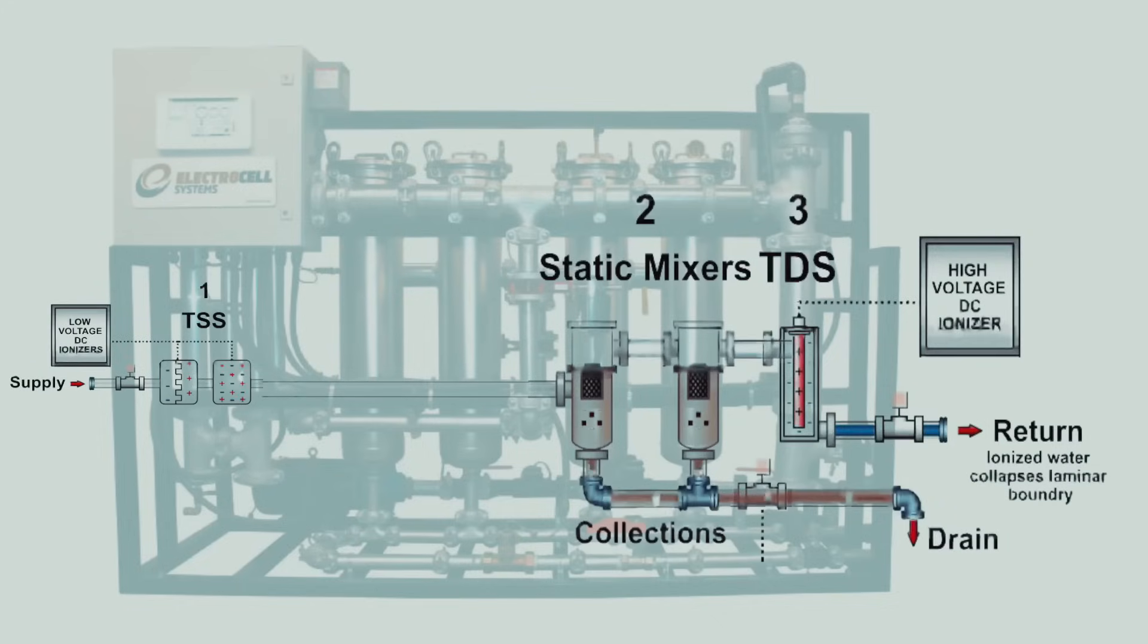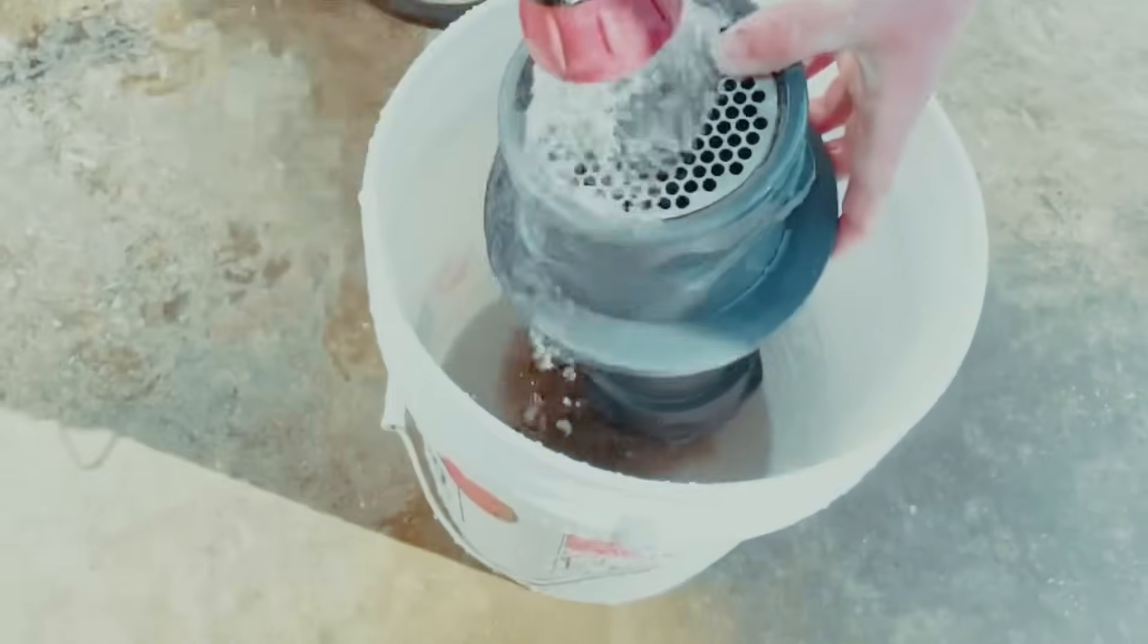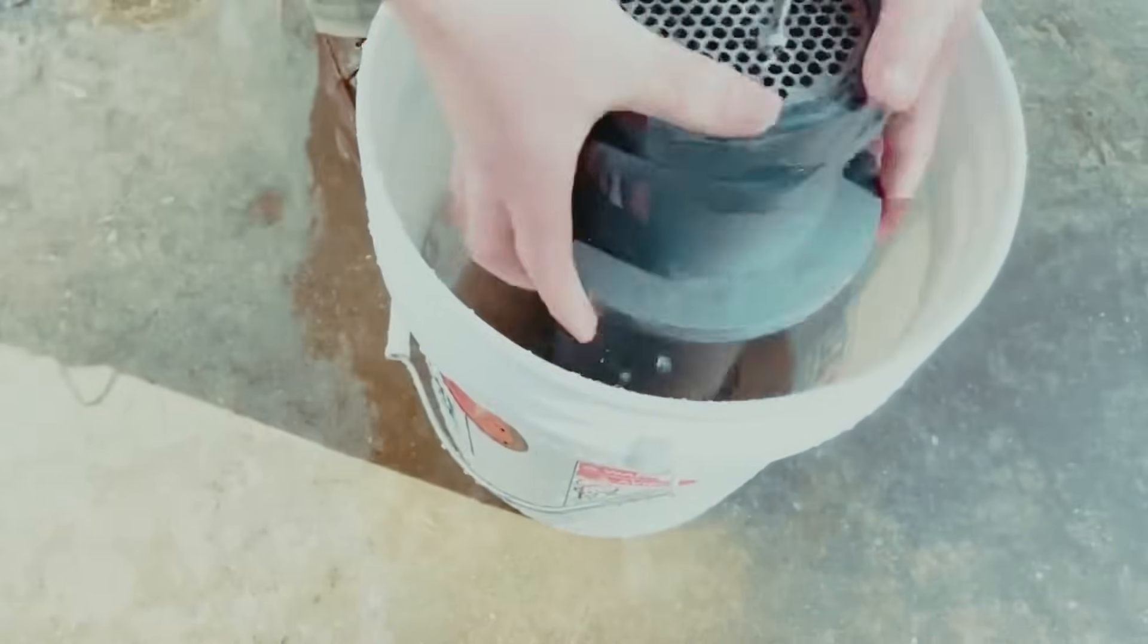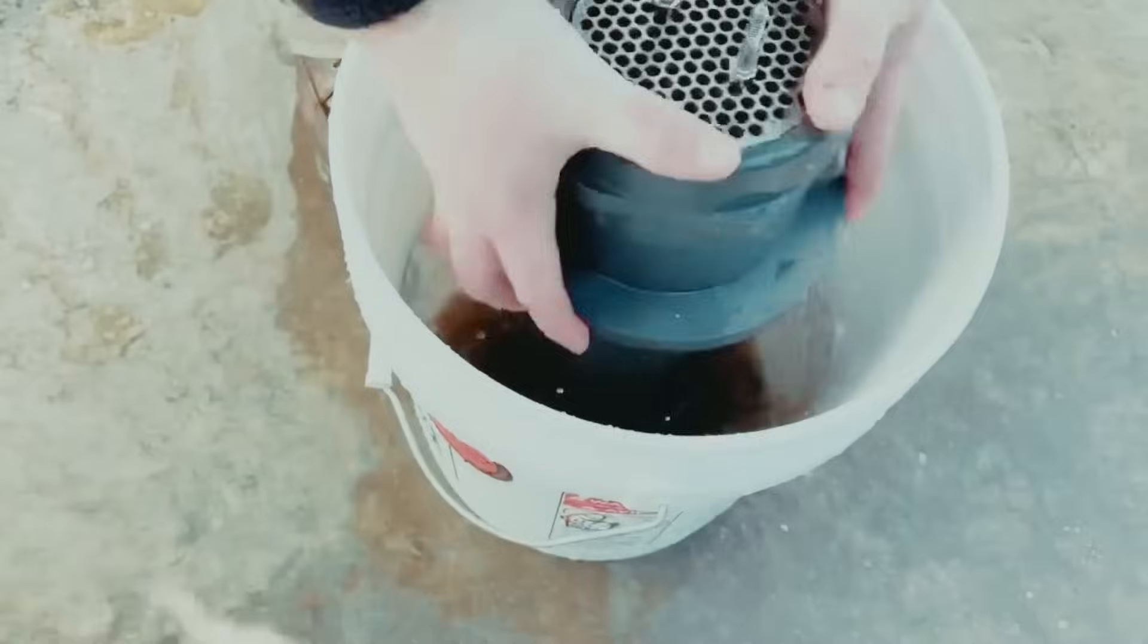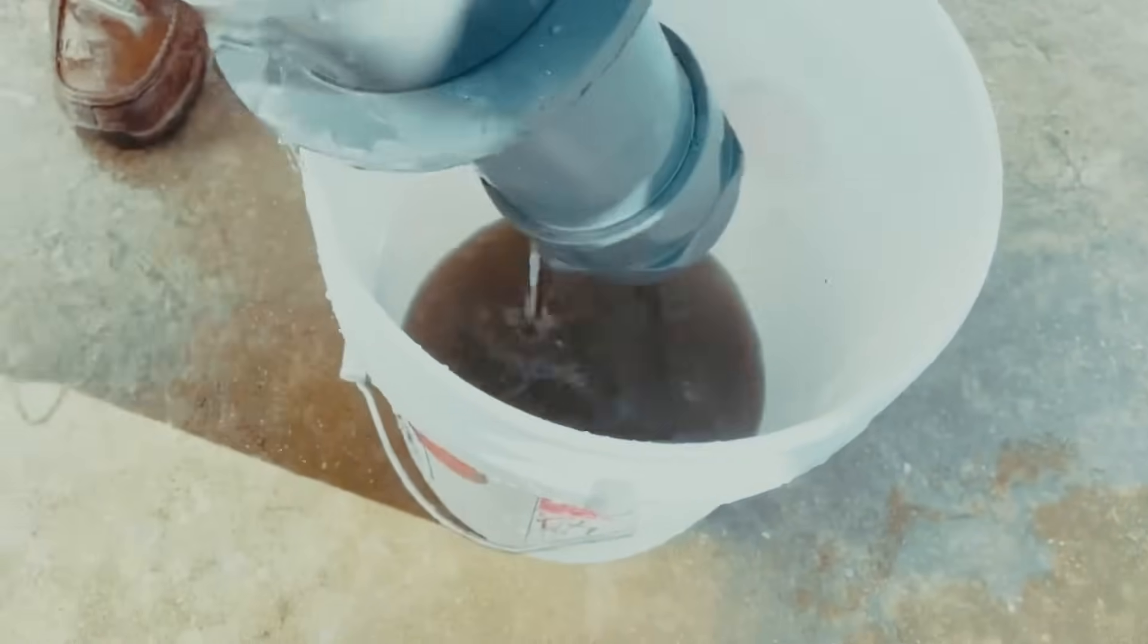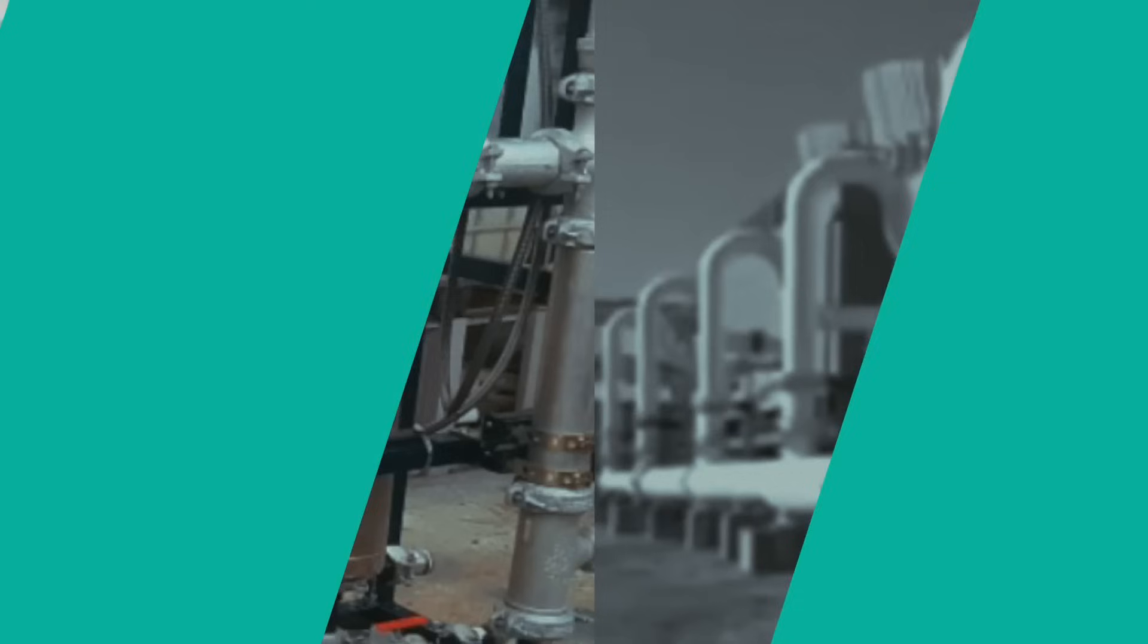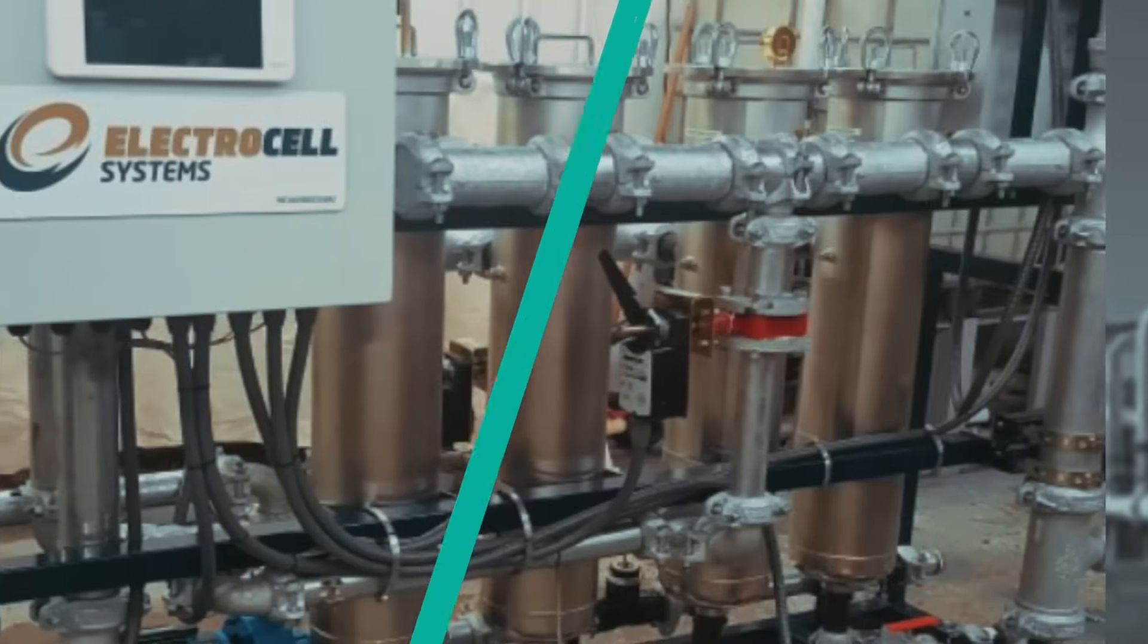Now that we've explained the three-phase process, let's look at a typical result. This is a customer-provided video of debris that was collected from just one static mixer vessel after a 24-hour period. This is what ElectroCell has removed from the water flow, allowing the unique performance improvement in open-loop chillers and cooling towers.